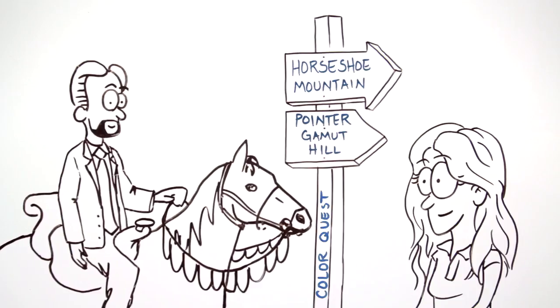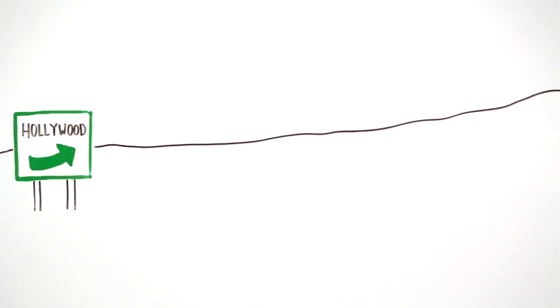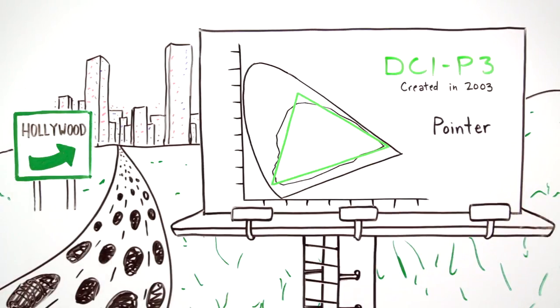Thus, the quest to expand digital color gamuts began. In 2003, the Hollywood studios specified the emerging standard for digital cinema as DCI-P3, wider than HDTV, but not quite as wide as film.